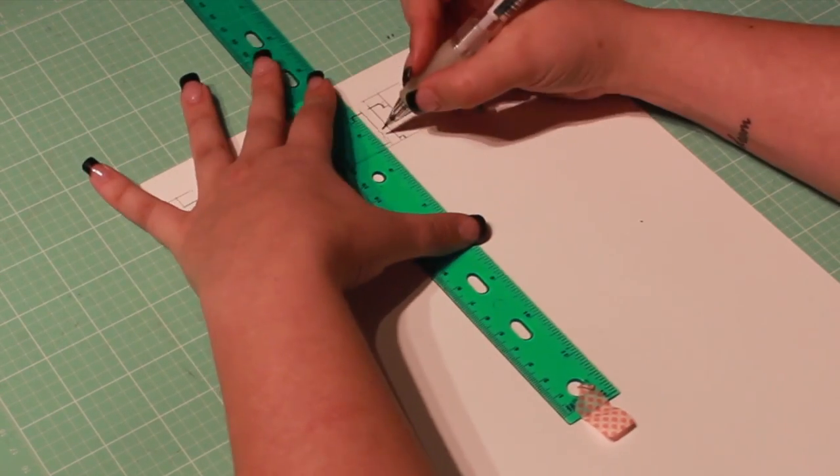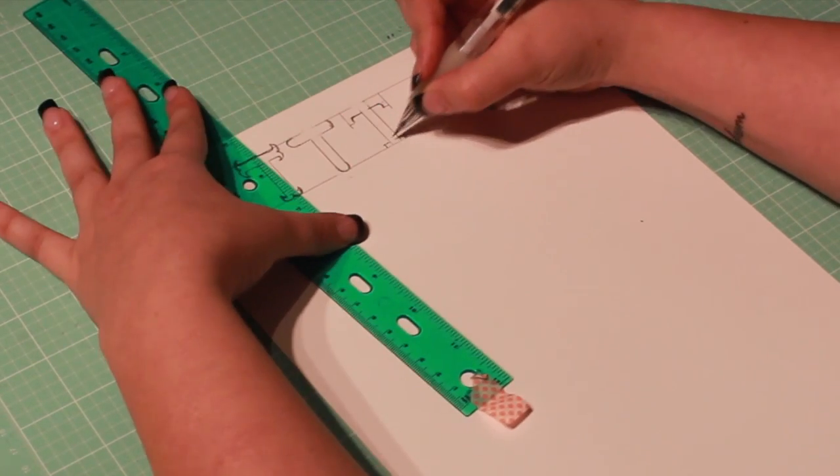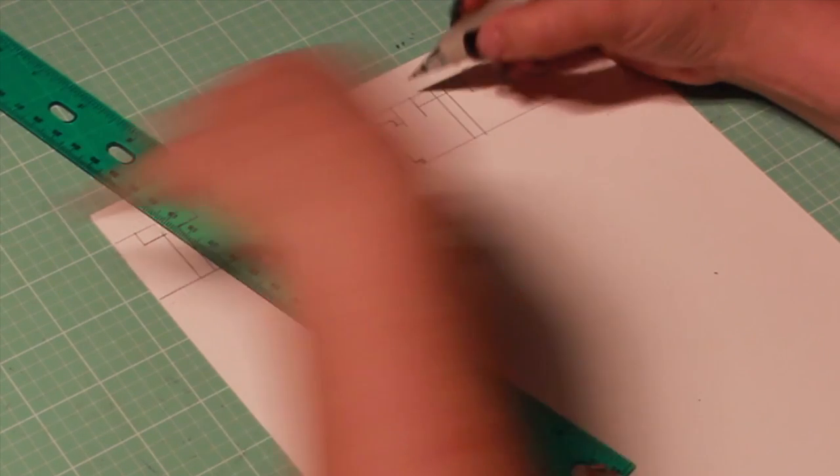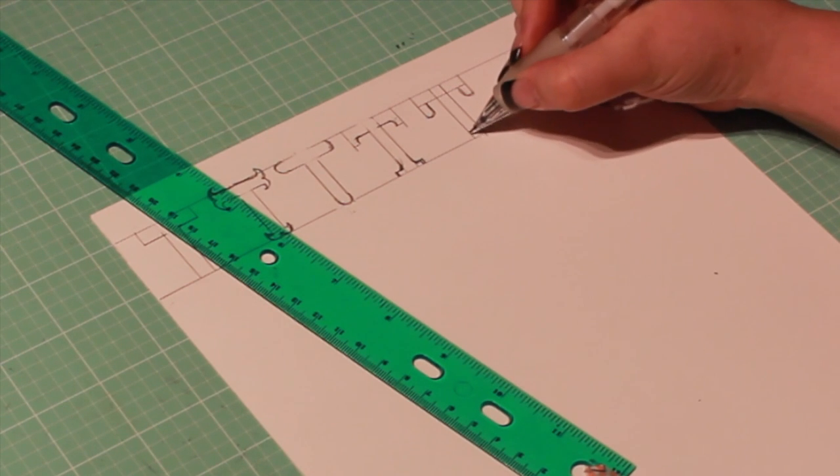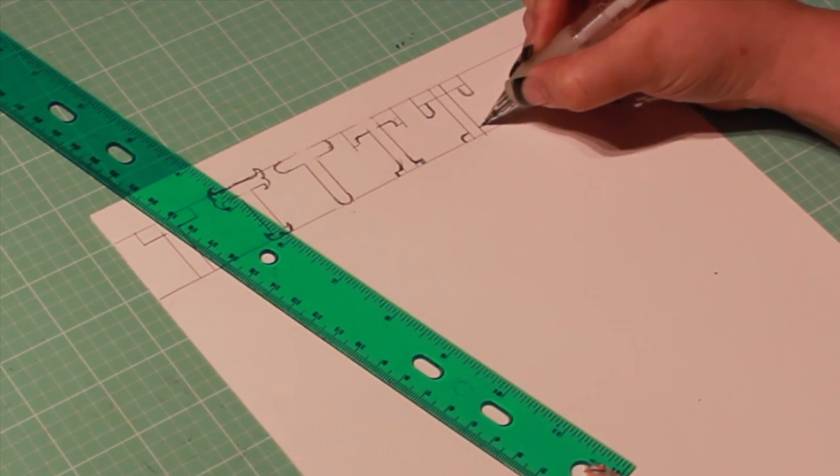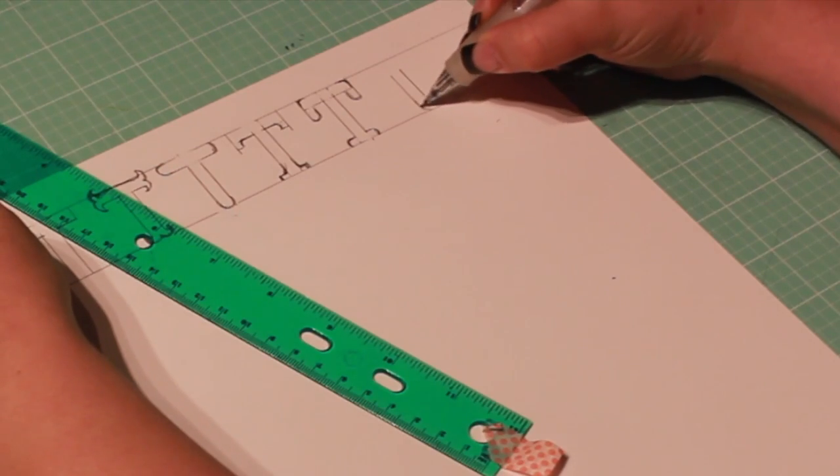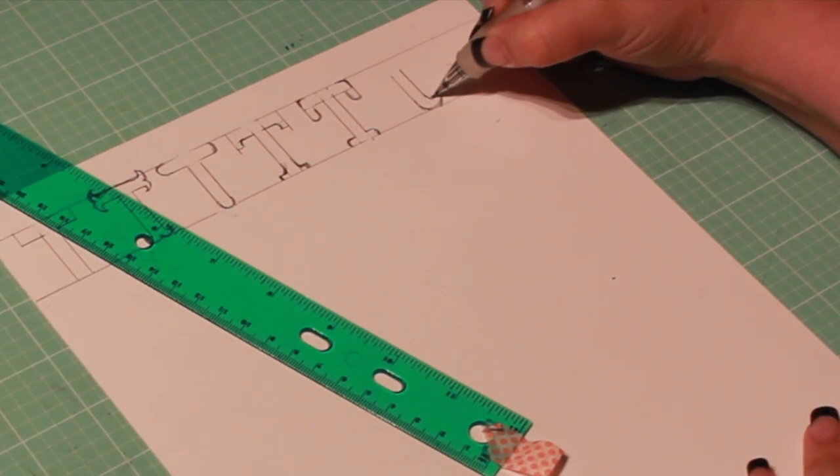I'm giving this one slab serifs. As you draw, pay attention to keeping your widths consistent. You can also try rounding off the serifs or drawing ball serifs. Try a curvy brush or script style letter.